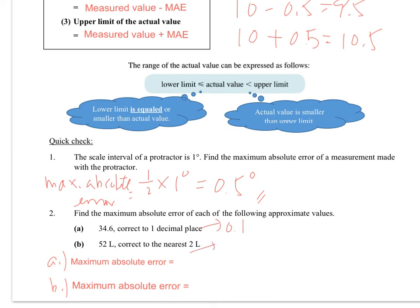2 liter here would be each 2 liter. So 2 would be our scale interval. We don't need to concern about our approximate value.